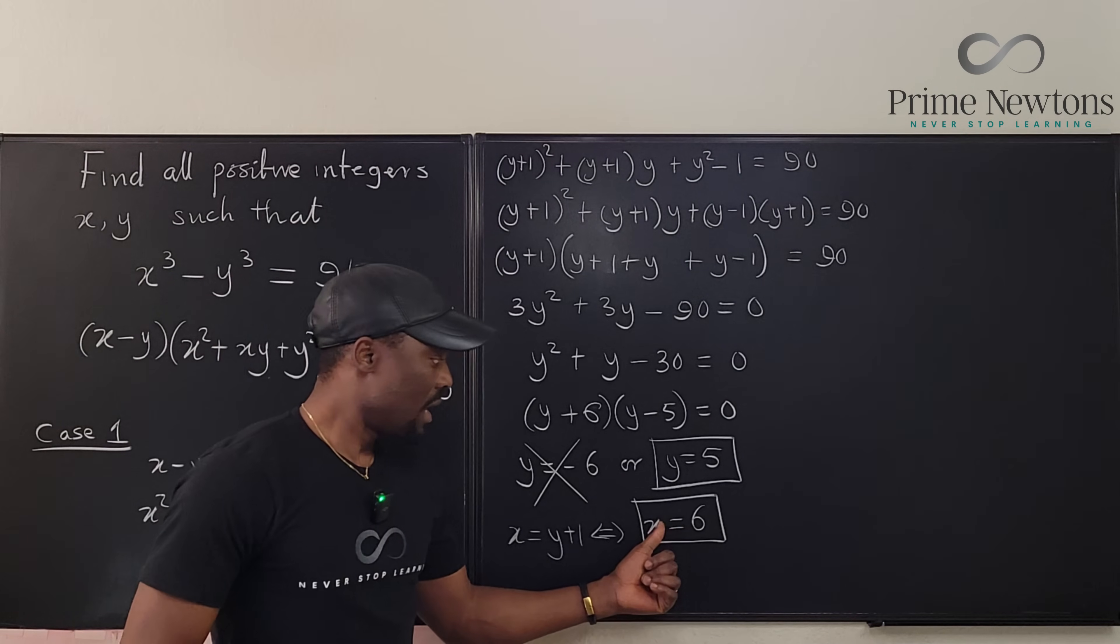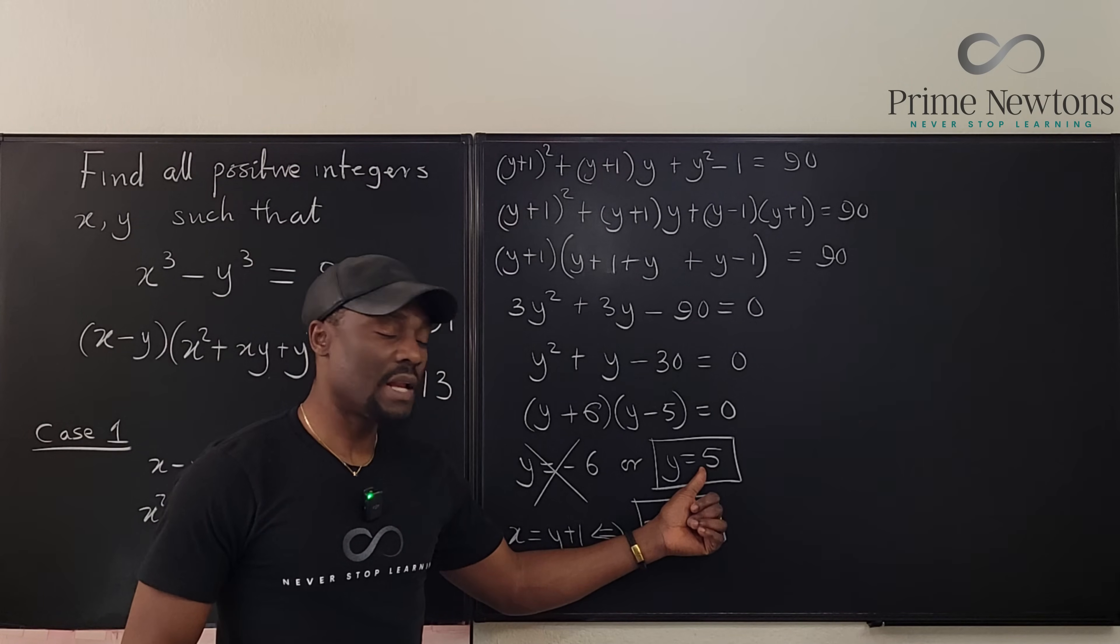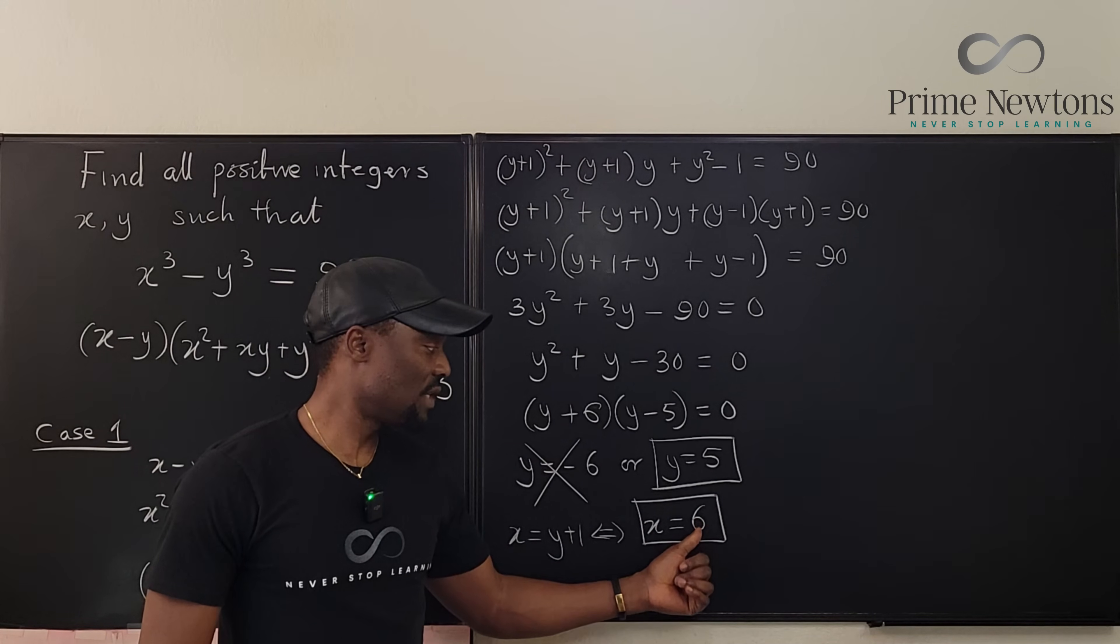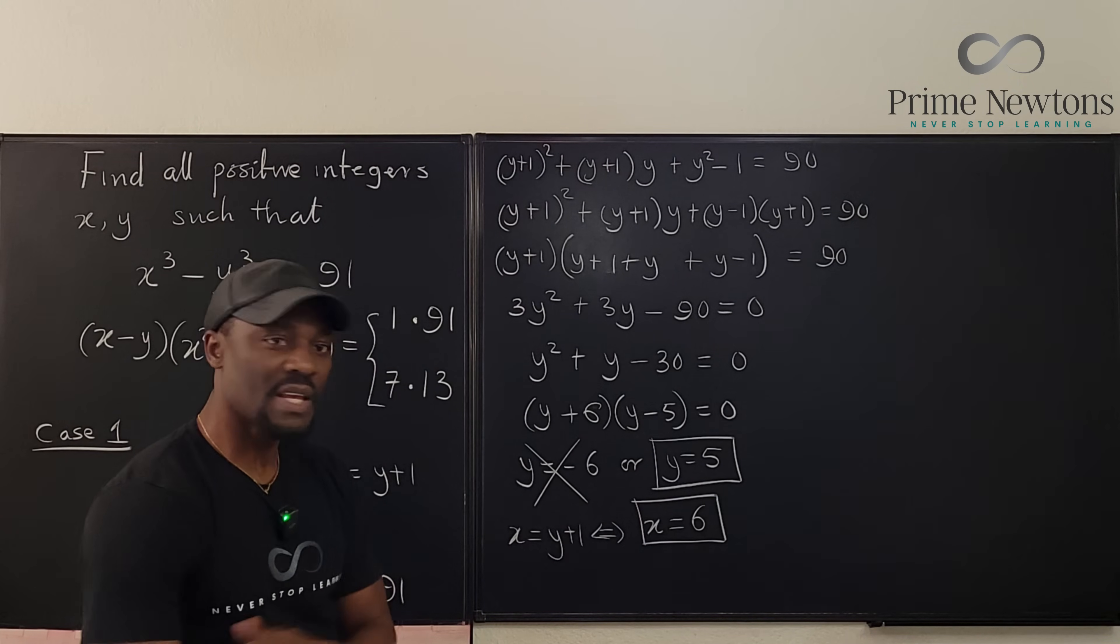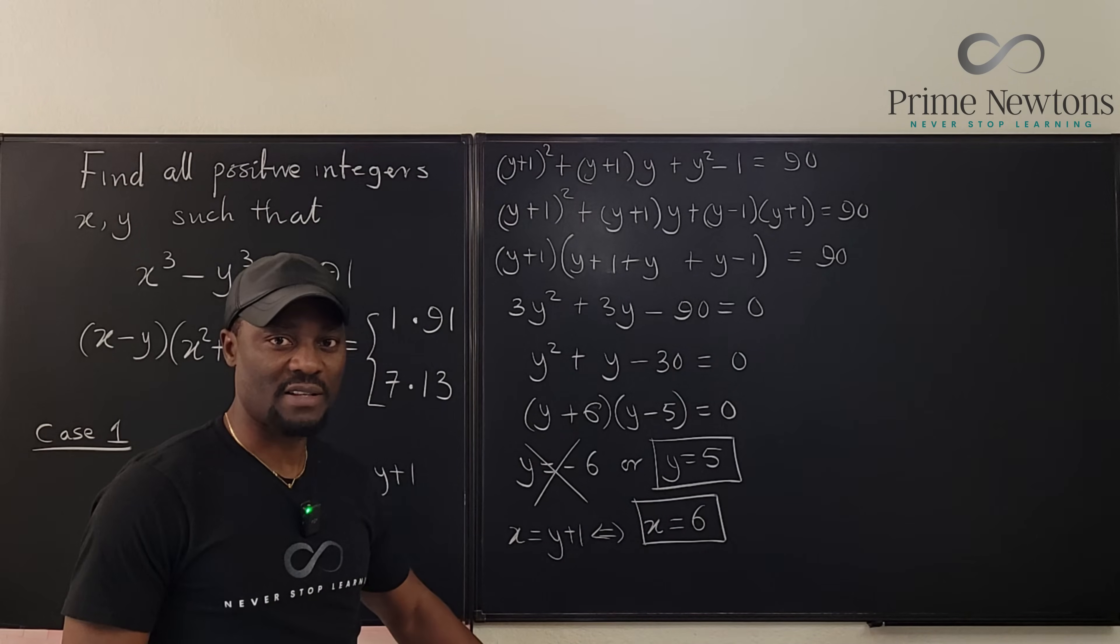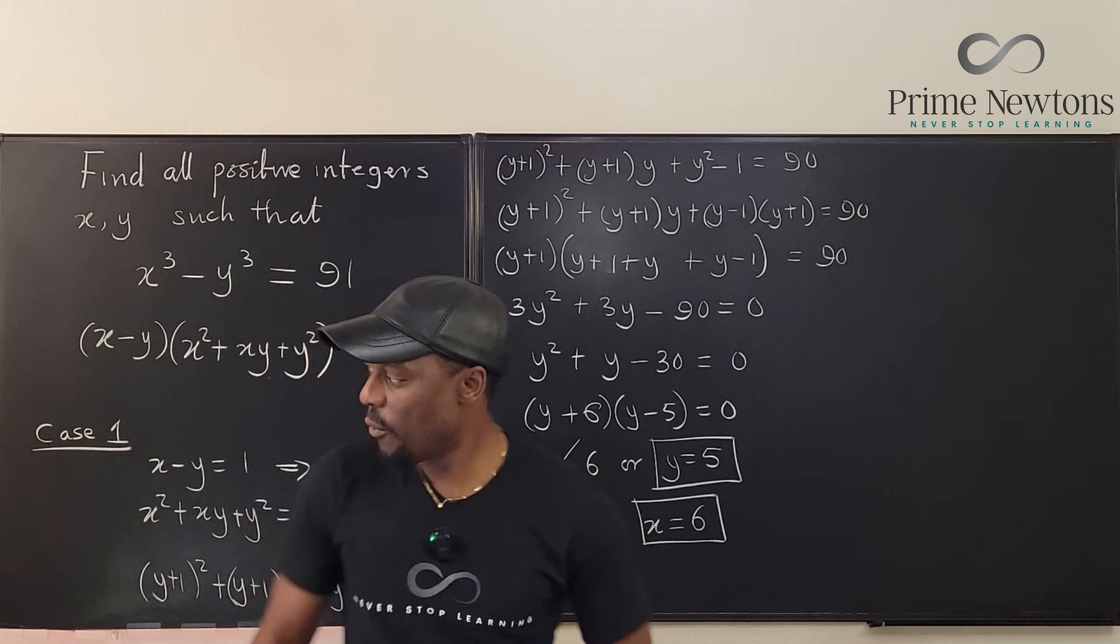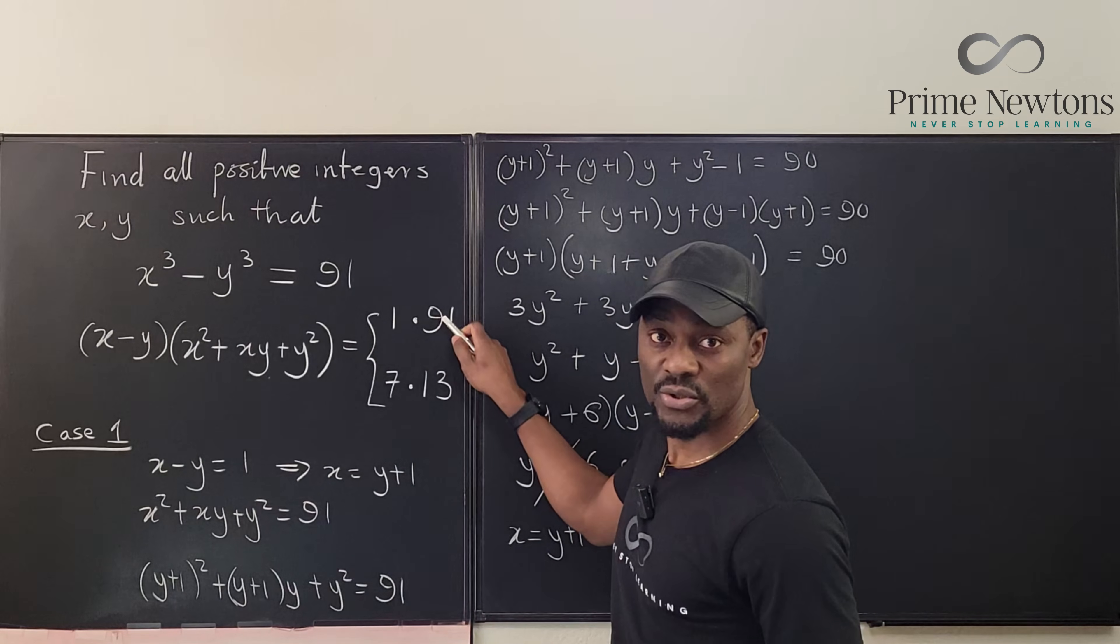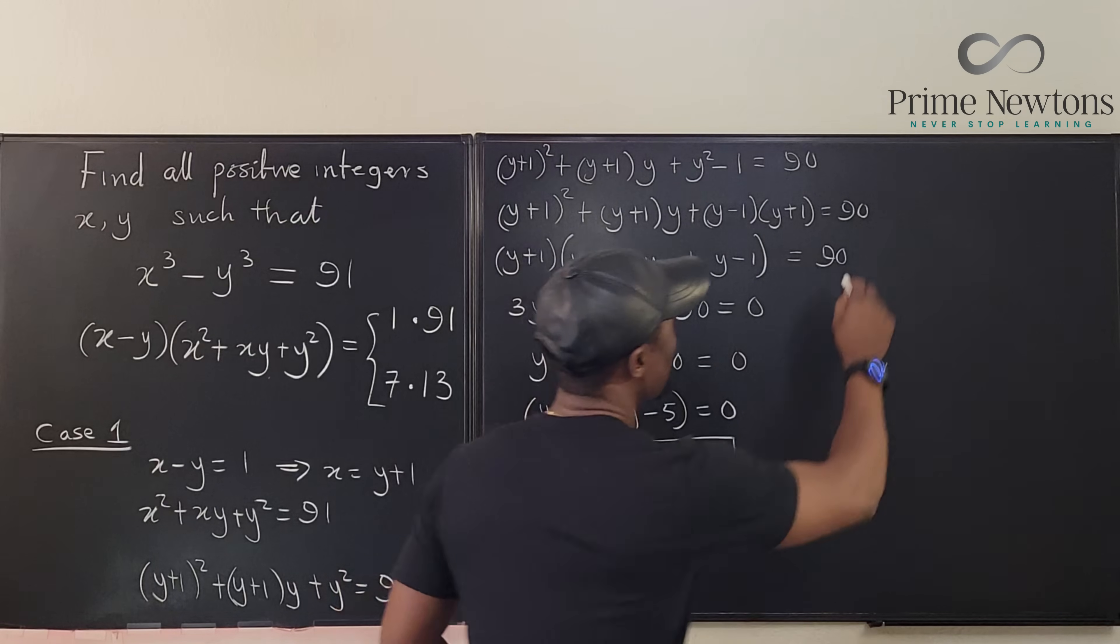Let's quickly check. x cubed will be 216 and y cubed is going to be 125. So 216 minus 125 is 91. So that is correct. So this is the only answer we got when we use the first equation. So now we're going to focus on the second equation.